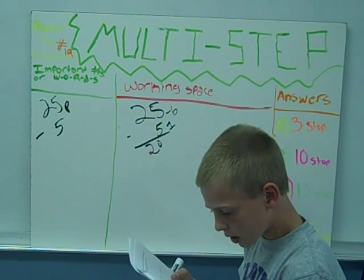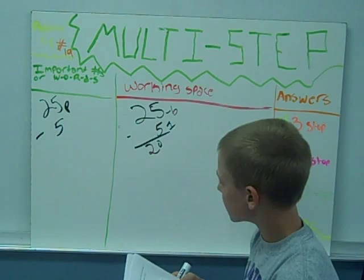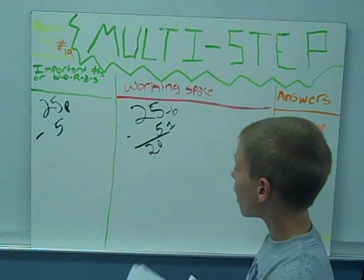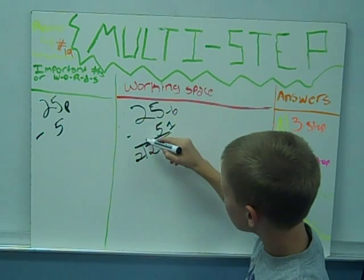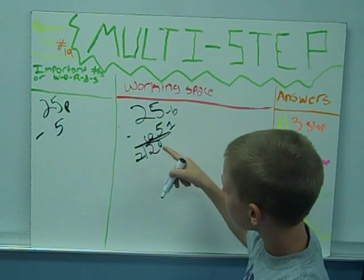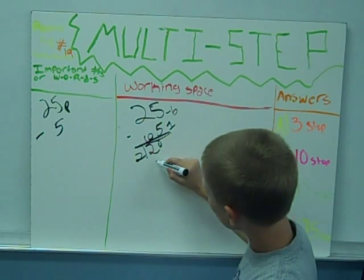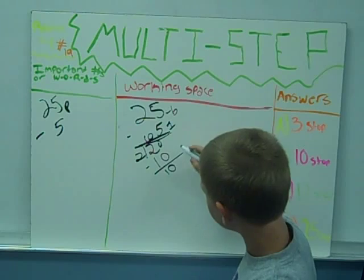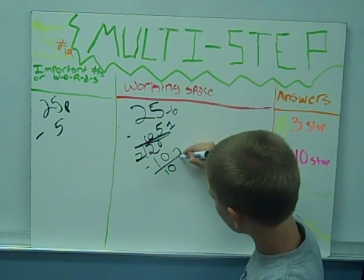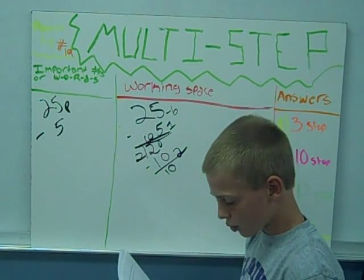At his second stop, he delivered half of the remaining pizzas to his school. So half of this divided by two is 10. And so half of 20 is 10. 20 minus 10 equals 10. And this is two stops. You have 10 remaining pizzas.